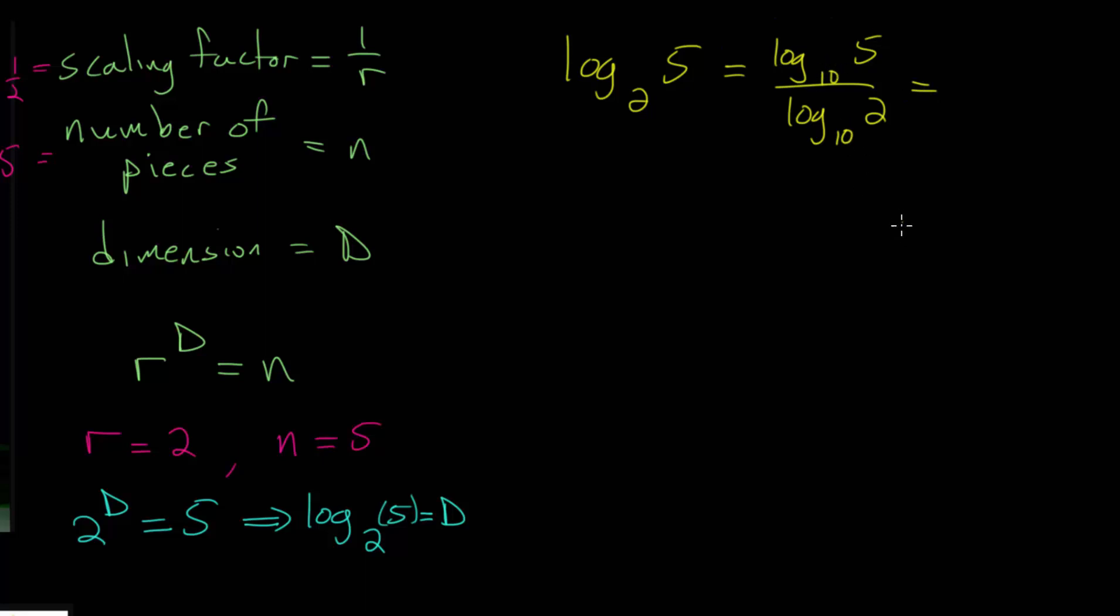And usually when the base is 10, we would just write log of whatever the input is, so log five over log two, and the base is implied to be 10, or we can use the natural log where the base of each of these is e, that number 2.718, and so on. It's irrational, but we'll write those logarithms as ln, which stands for the natural log, of five over the natural log of two.